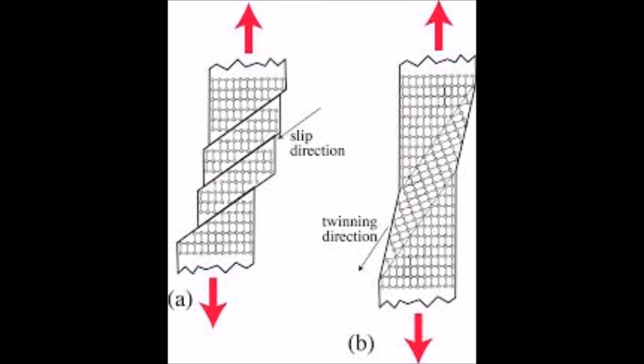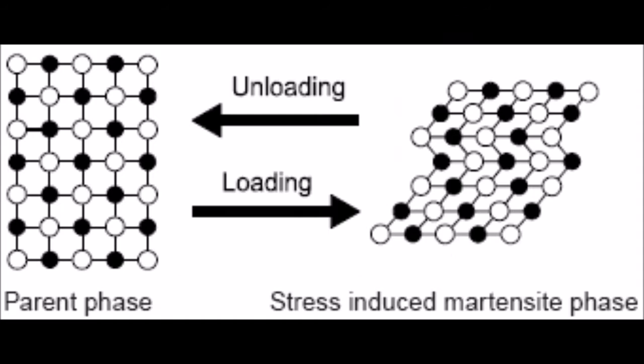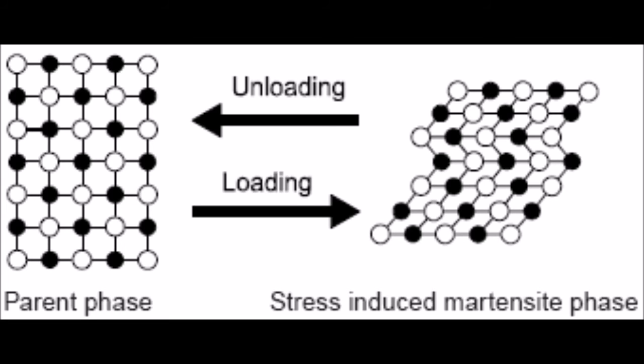which transforms different martensite variations to the particular one variation that can accommodate the maximum elongation. Once the stress, or earthquake in our case, is no longer being applied to the SMA, it then returns to its original phase.